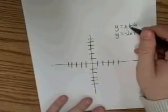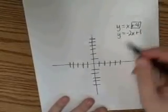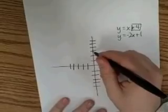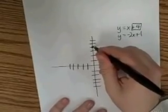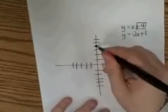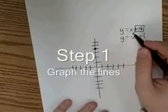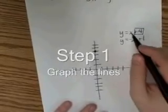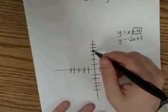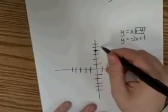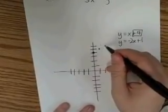In this first one, we have a y-intercept of positive 4, so we're going to go up to 1, 2, 3, 4. We're going to make our mark. That right there is that positive 4. My slope is 1. Anytime you see just an x, remember there's an invisible 1 in front of it, so my slope is 1. I go up 1, over 1, up 1, over 1.